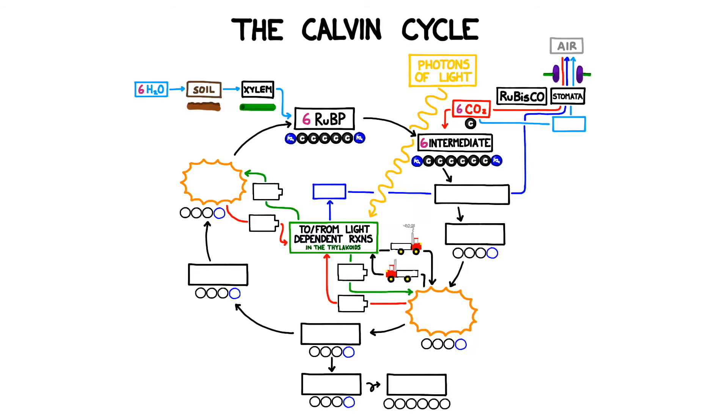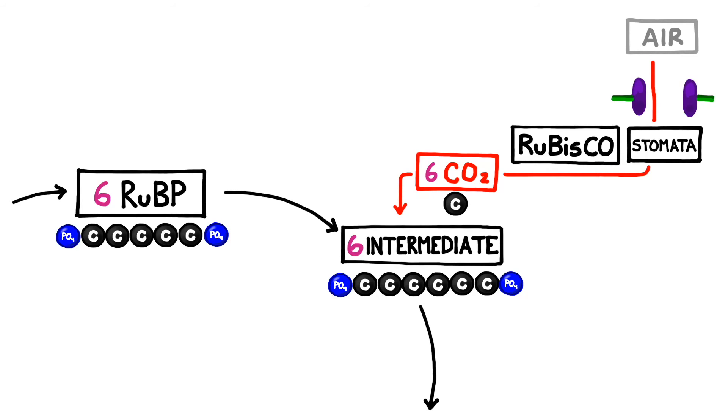This addition is done by an enzyme called RUBISCO. Like RUBP, RUBISCO is also a nickname. Its legal name, if you will, is ribulose 1,5-biphosphate carboxylase oxygenase. This process of adding carbon dioxide is also known as carbon fixation, where inorganic carbon from the atmosphere is incorporated into an organic molecule. Notice how we still have the same number of carbons before and after this step. We haven't magically created or lost any.